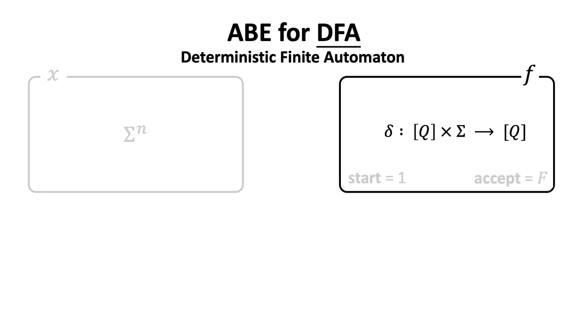In general, a DFA of Q states and alphabet sigma is defined by a transition function delta and a set of accept state F.